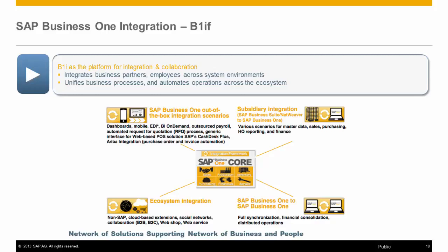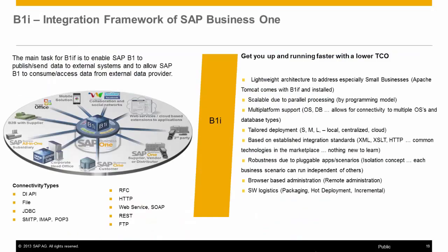The platform allows for integration and collaboration, thereby integrating business partners and employees across system environments, and unifies business processes and automates operations across the ecosystem. The main task for the SAP Business One Integration Framework is to enable SAP Business One to publish and send data to SAP systems as well as external systems, and to consume and access data from any external data provider. You can see the many connectivity types available such as Flat File, Web Services, JDBC, FTP, and many more — all built-in and ready for use once the solution is installed.